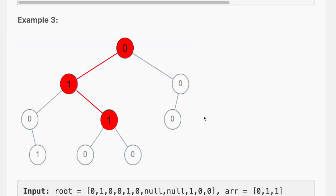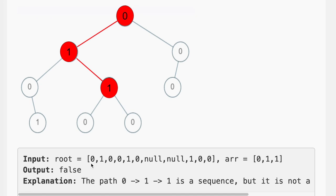The same logic applies to example 3. The array is 0, 1, 1. We start from 0, the next element is 1 so we go to 1, then the next element is 1 and we come here. But we reached the end of our array without reaching a leaf node, so we return false.